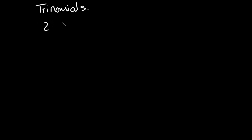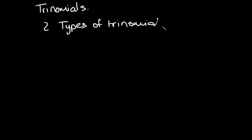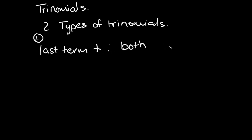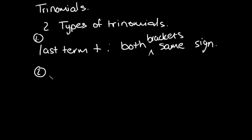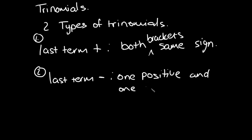The first thing that's very important to understand is there are two types of trinomials. The first type is where the last term of the trinomial is positive — when the last term is positive, both brackets will have the same sign. The second type is where the last term is negative — when the last term is negative, we'll have one positive bracket and one negative bracket.